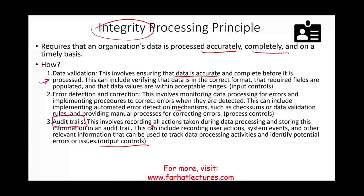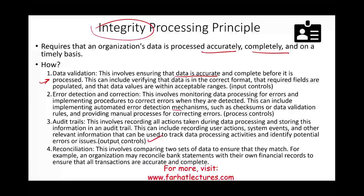Audit trails involve recording all actions taken during data processing and storing this information so you can go back and see what happened. This includes recording users' actions, system events, and other relevant information to track data processing and identify potential errors or issues — this is output controls. Reconciliation is also a key control, involving comparing two sets of data to ensure they match. For example, an organization may reconcile a bank statement with their general ledger cash, which should match after appropriate adjustments.